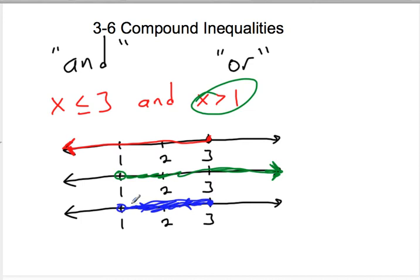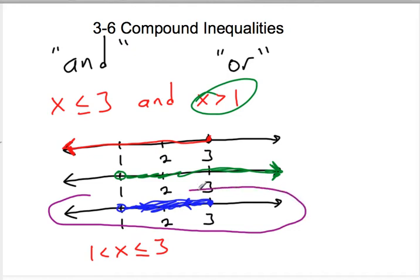Another way to write an AND statement is to join them. So I could write it as: x is greater than 1 and less than or equal to 3. Values like 1.1, 2, and 2.9 all work within this one combined inequality, and this would be the answer to the compound AND statement.